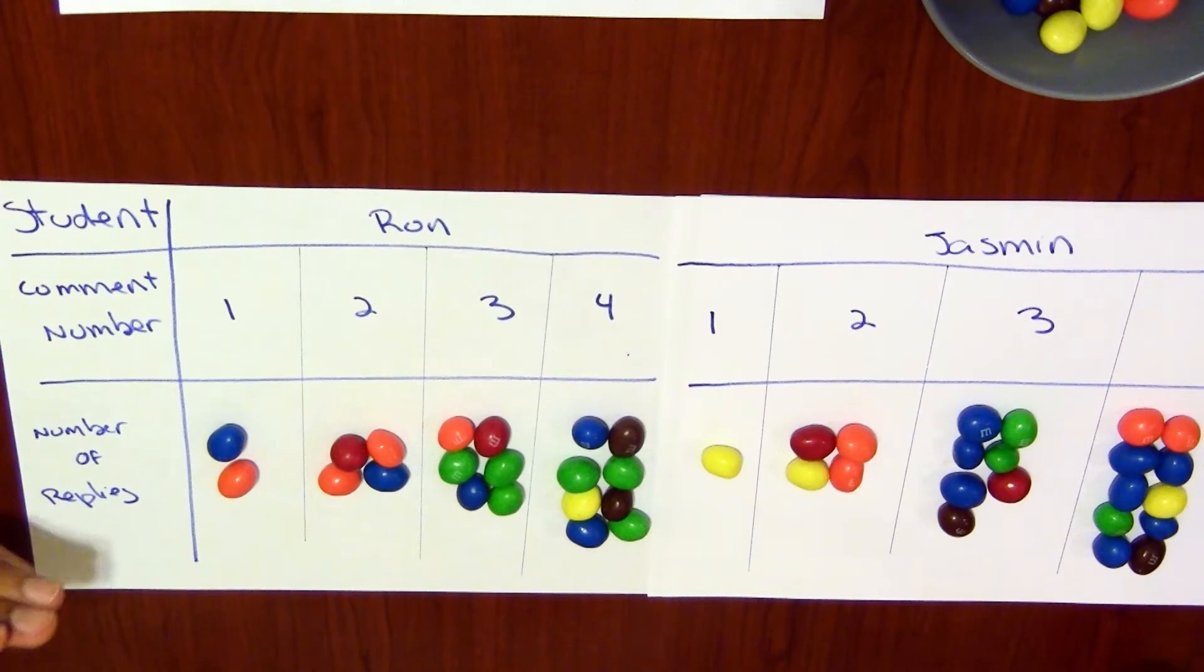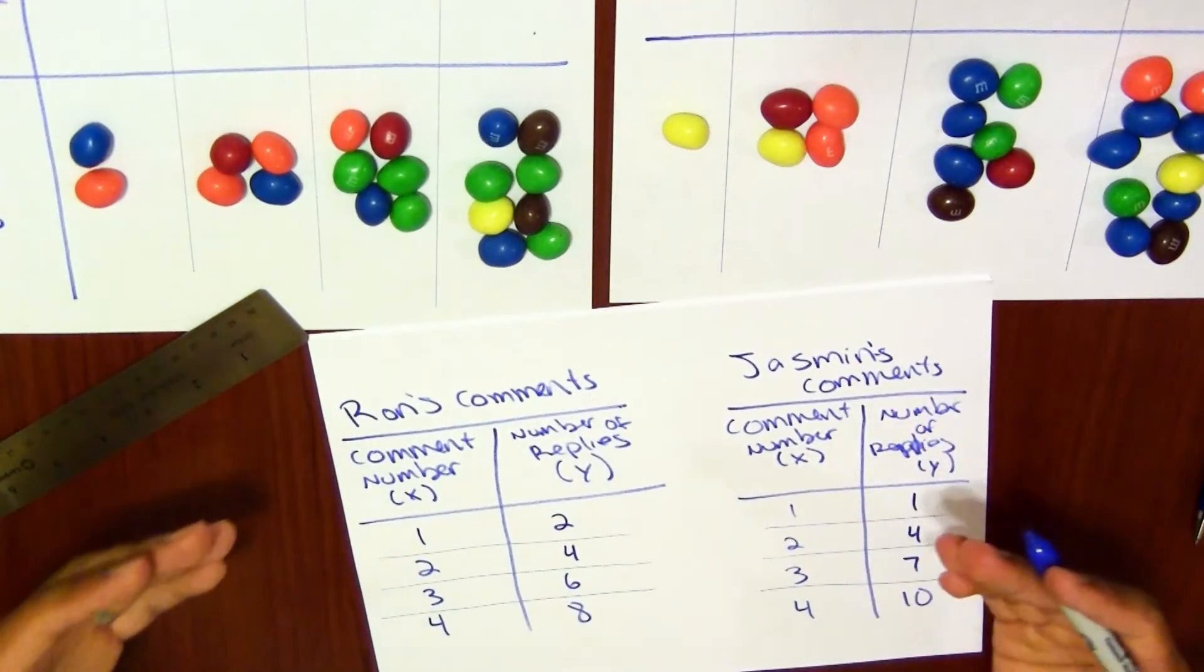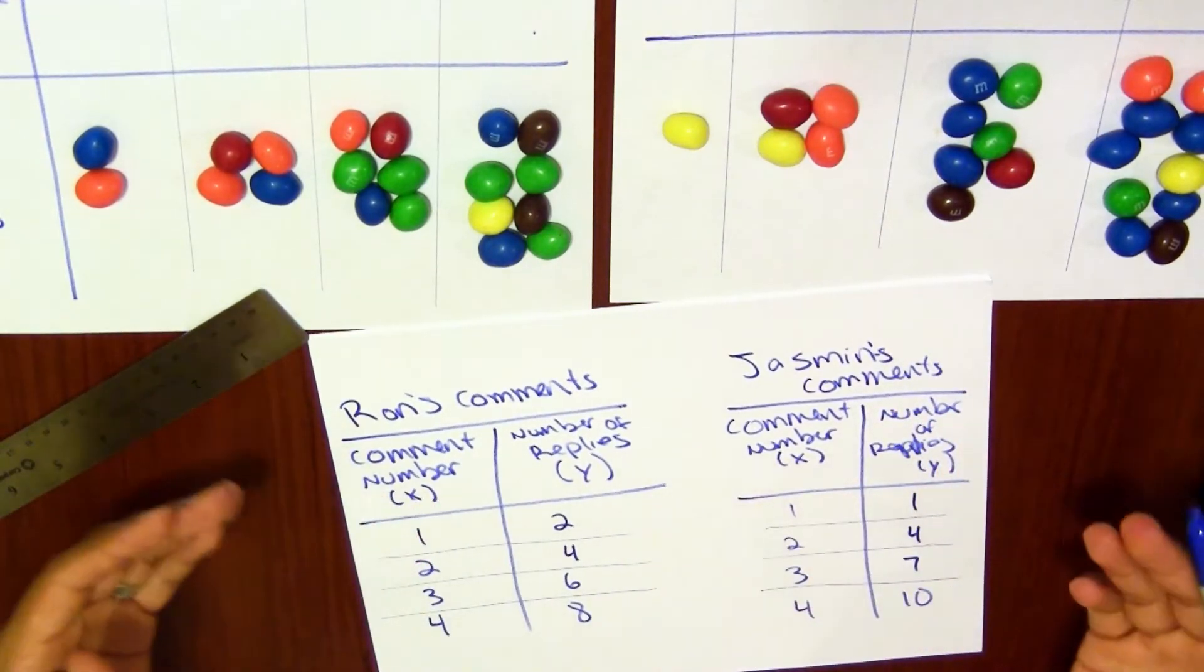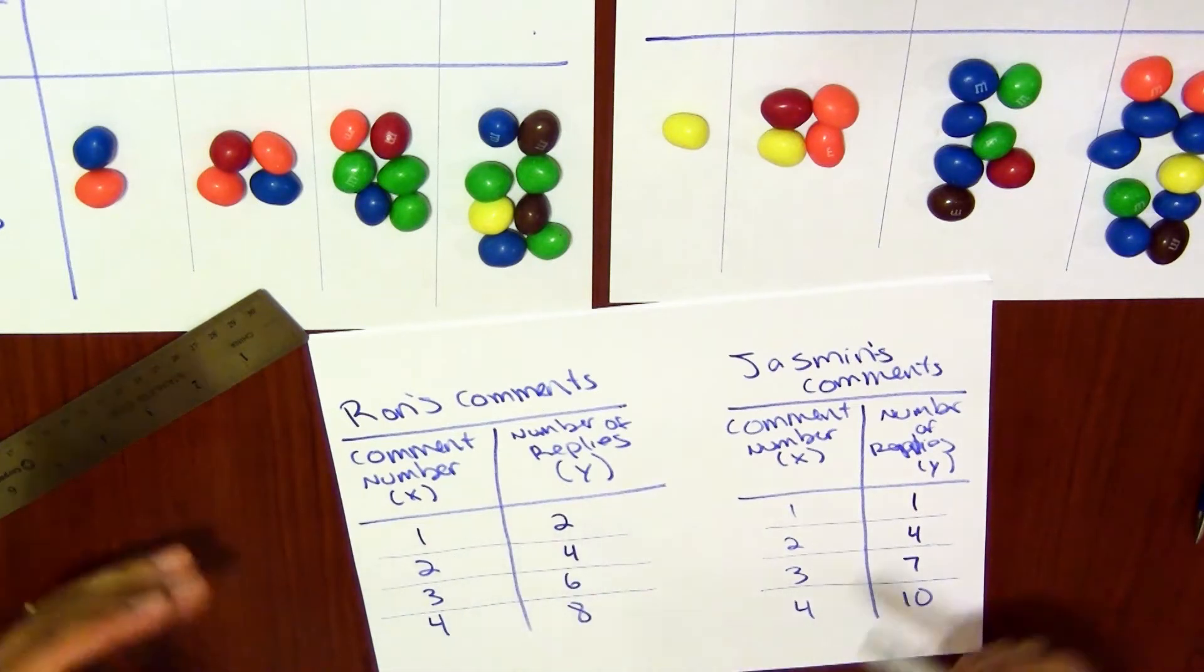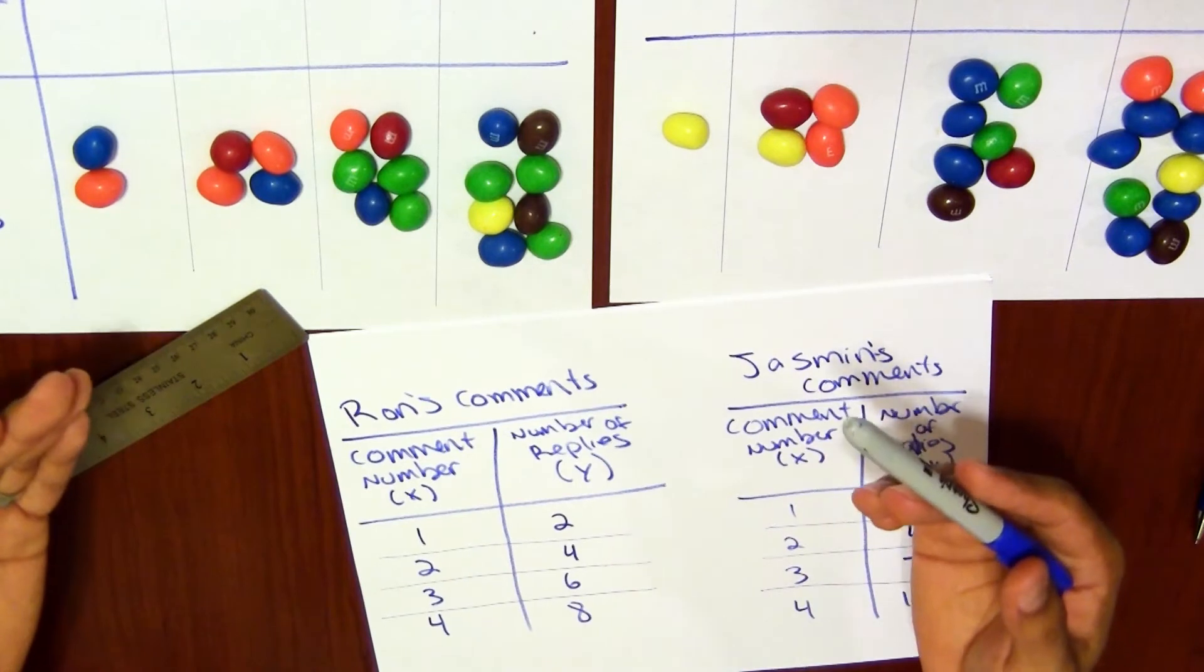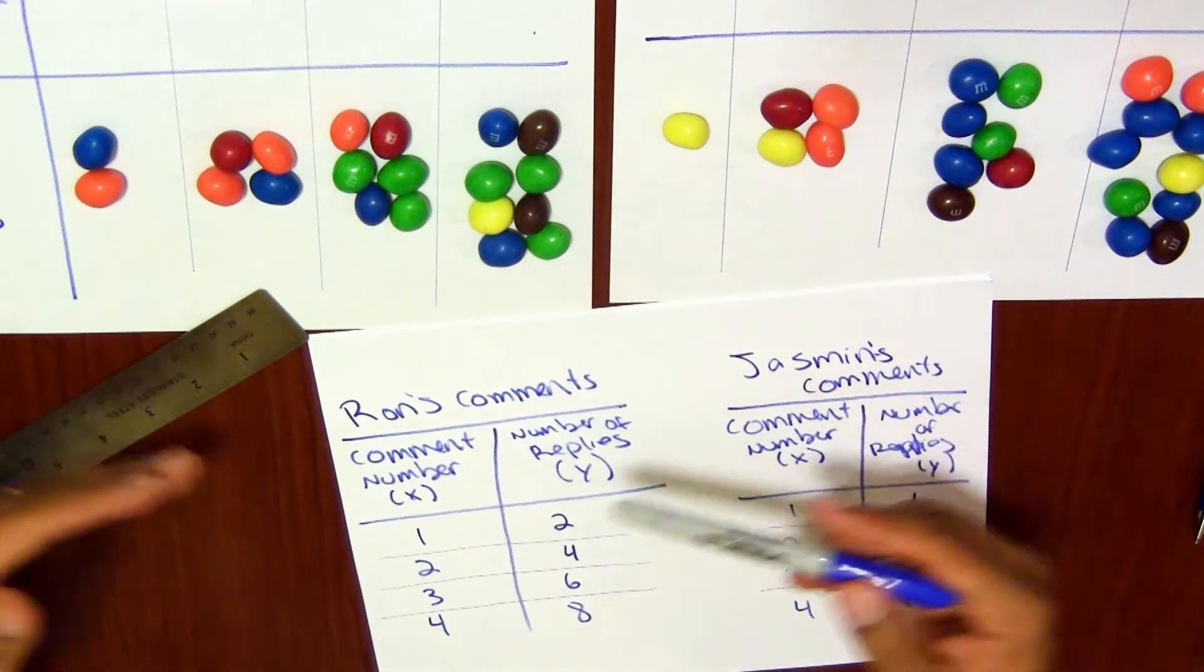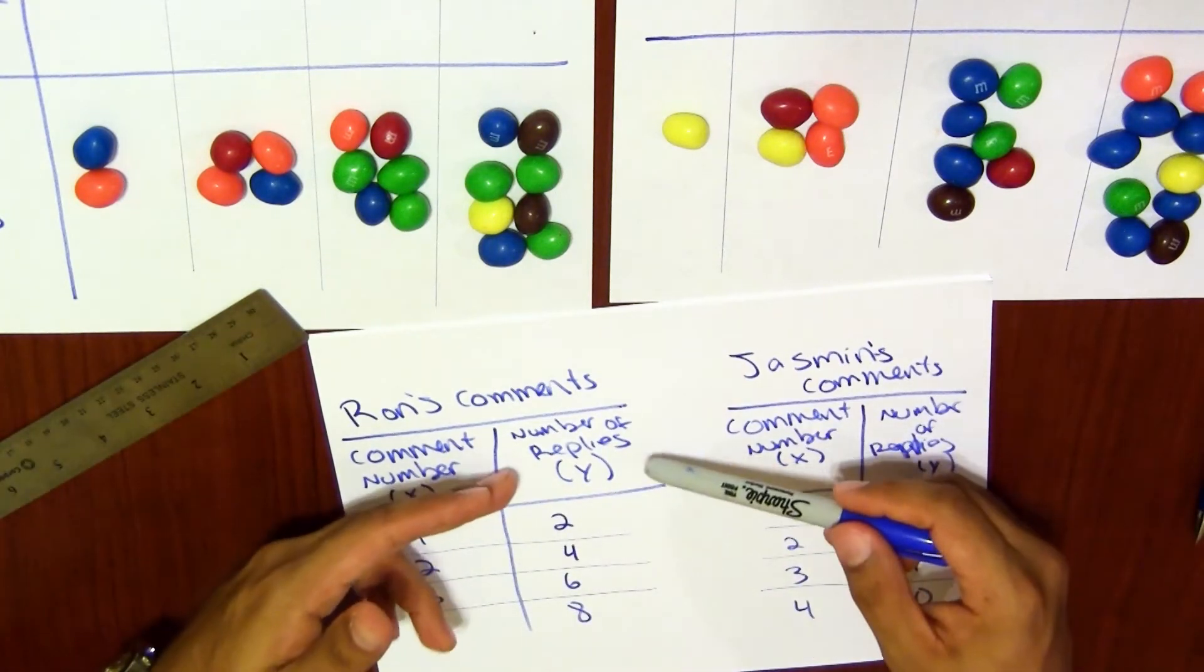Okay, so here we have our model. Now what we can have the students do is have them create a table and a graph. All right, so the students created their tables, and notice that this is really important that they identify the dependent and independent variables. This is about the mathematical practice of precision, that the comment number represents X and the number of replies is represented by Y.